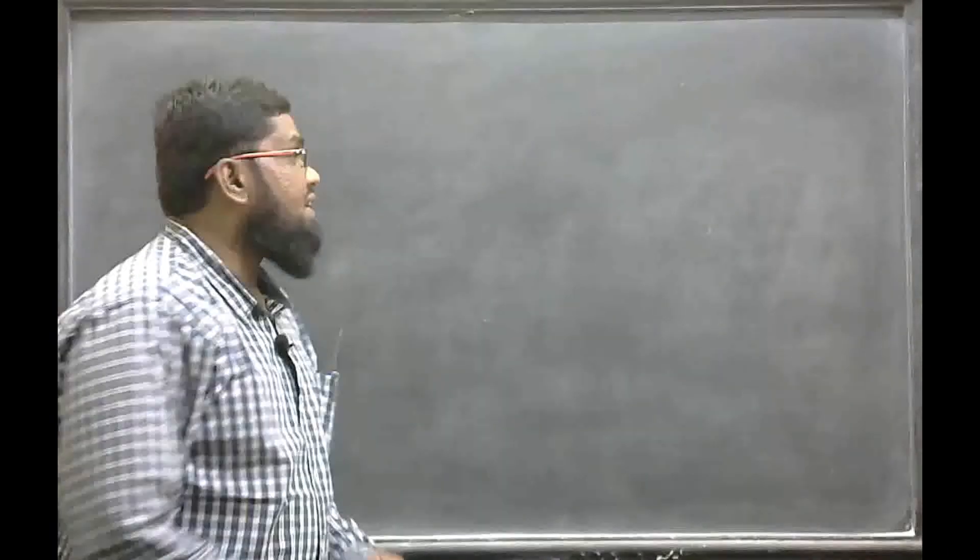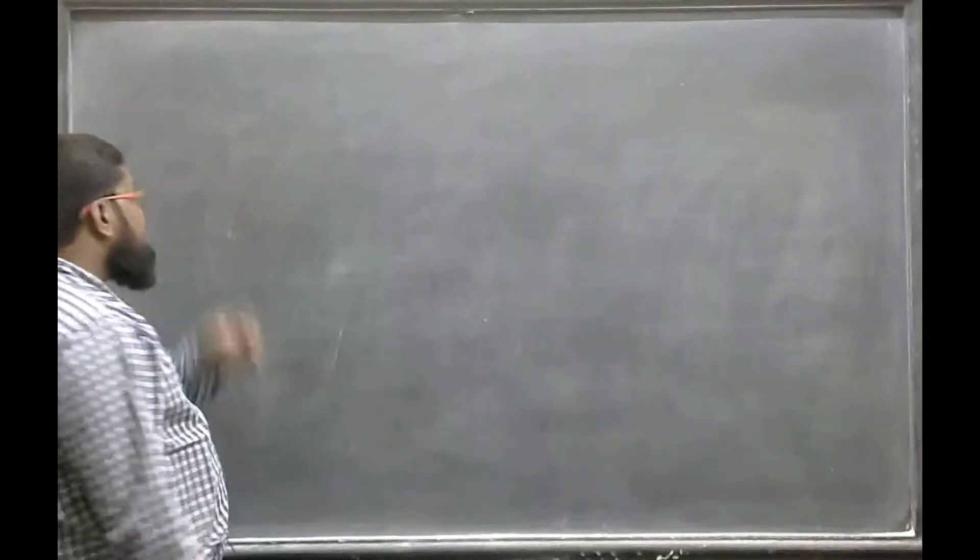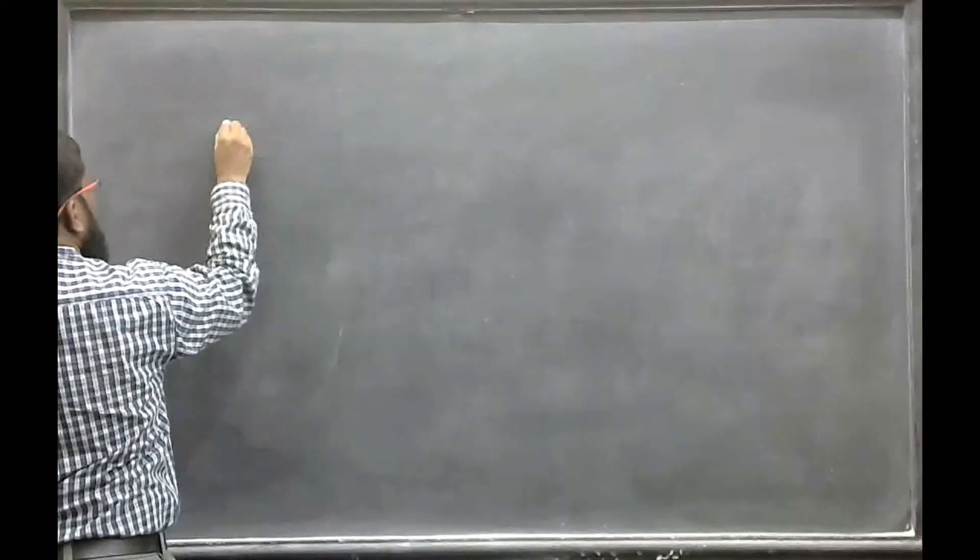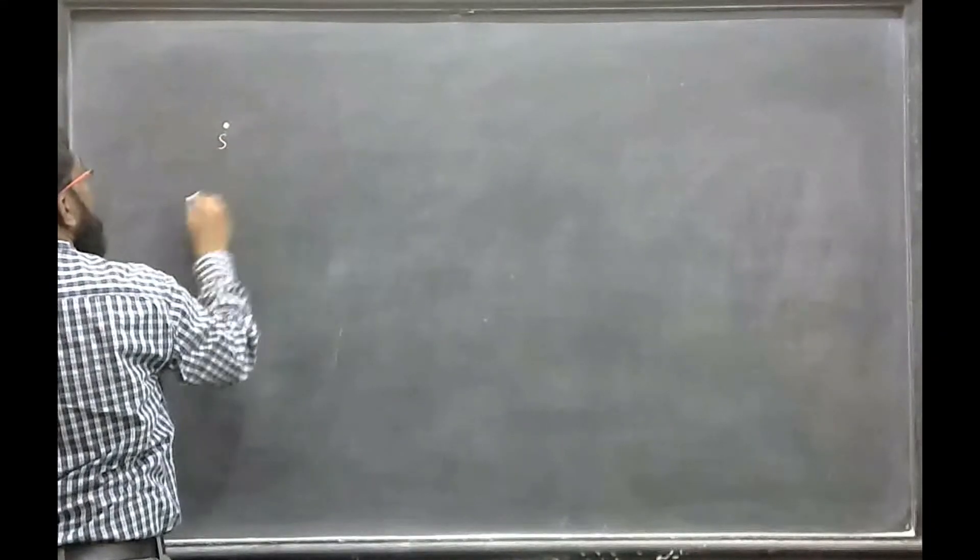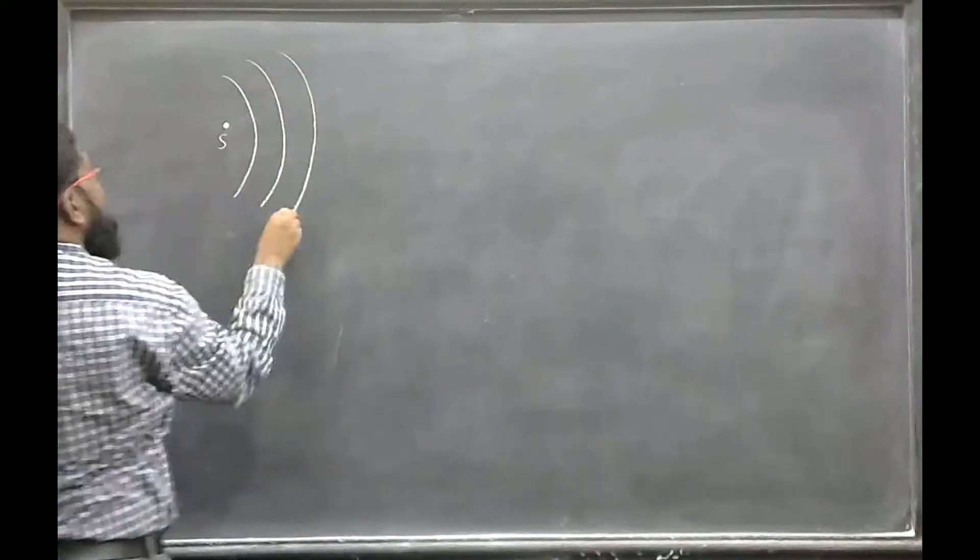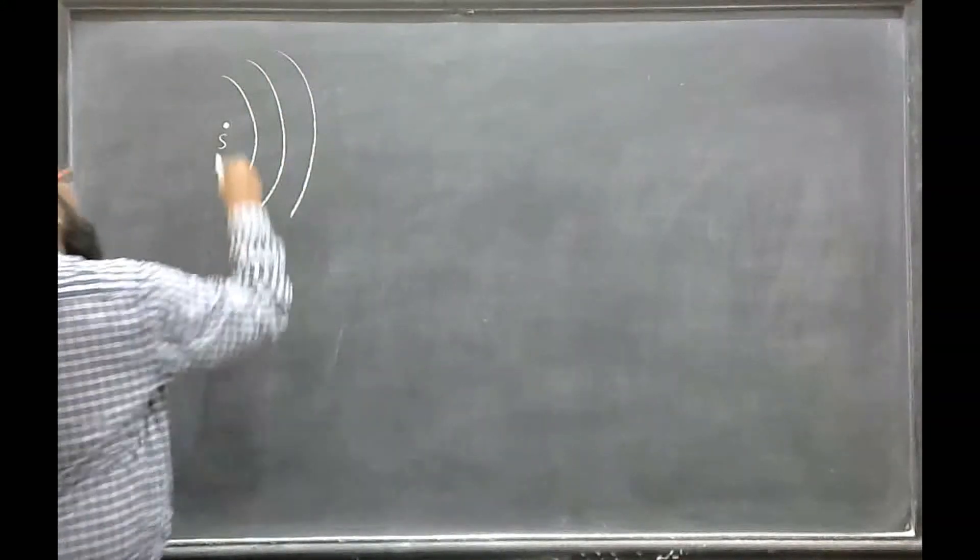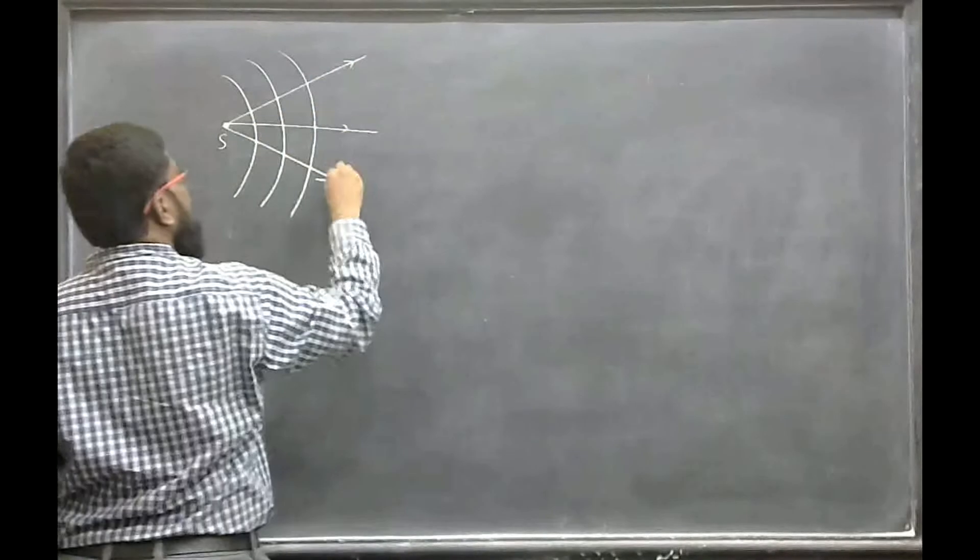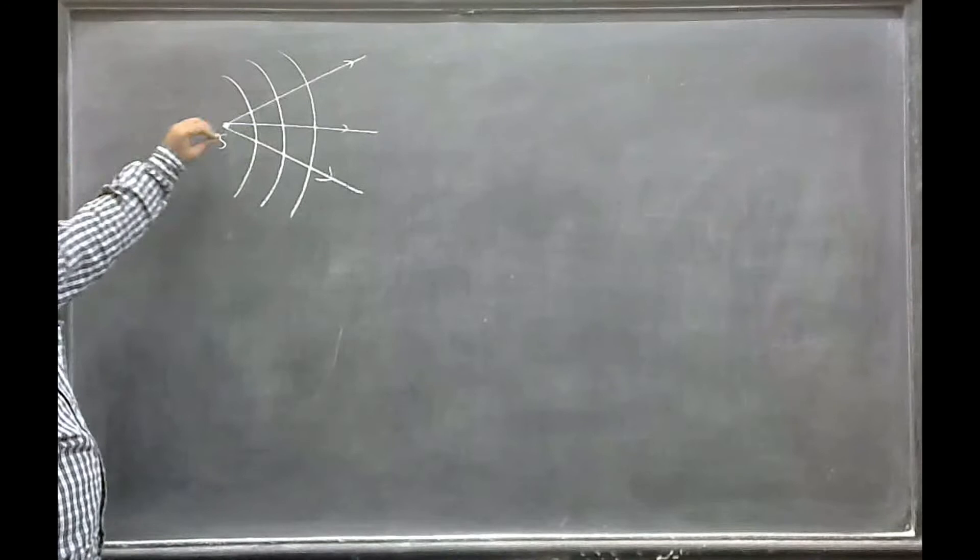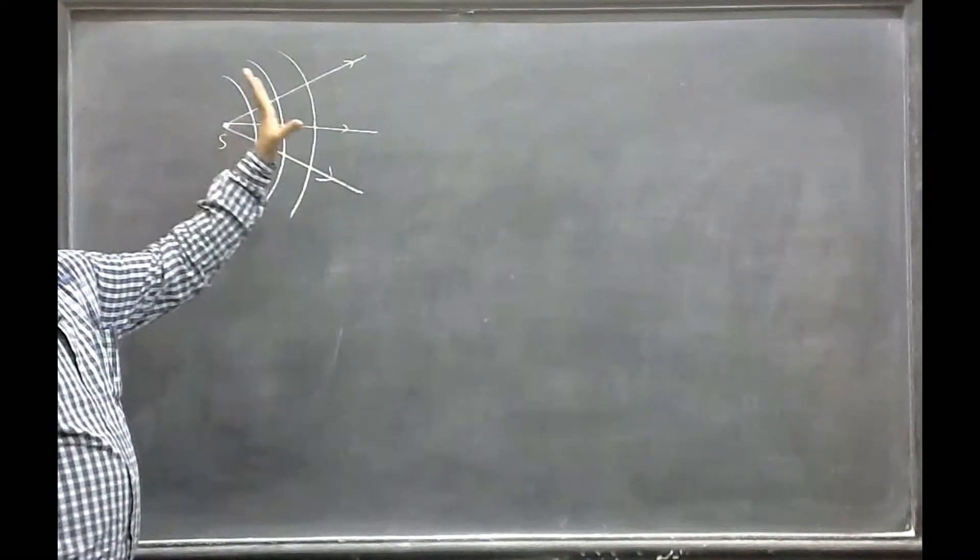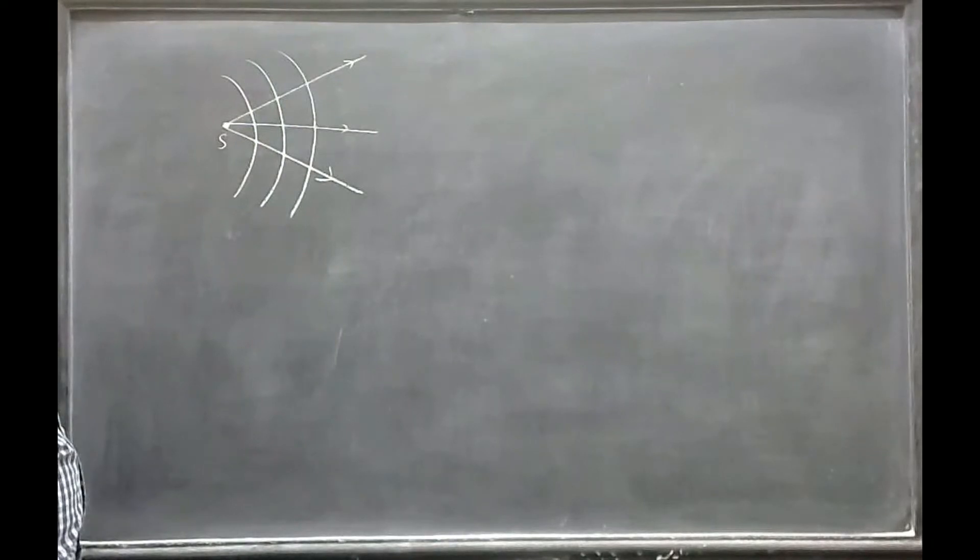So let us spend some little bit time on Huygens wave theory. So according to Huygens, so a particle - sorry, a source will be here, called as a primary source. Then it will radiate waves. These are the wave prints and this is the propagation direction of the wave. So we say that light diverges, spreads out and diverges from here. Okay, wave prints.